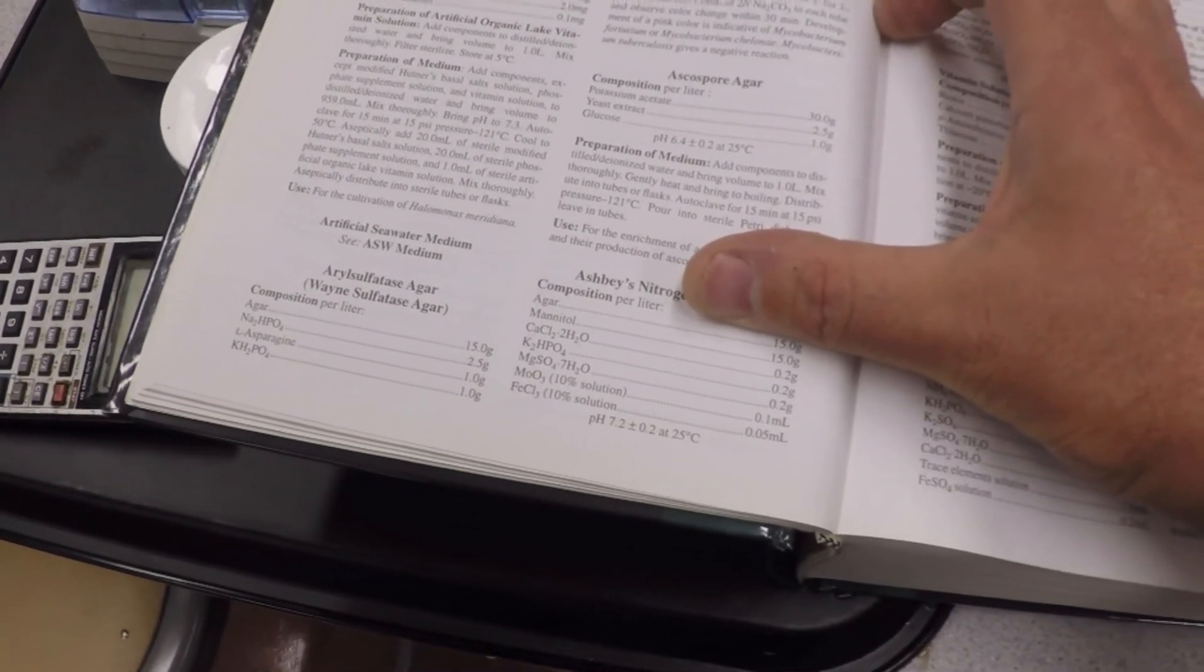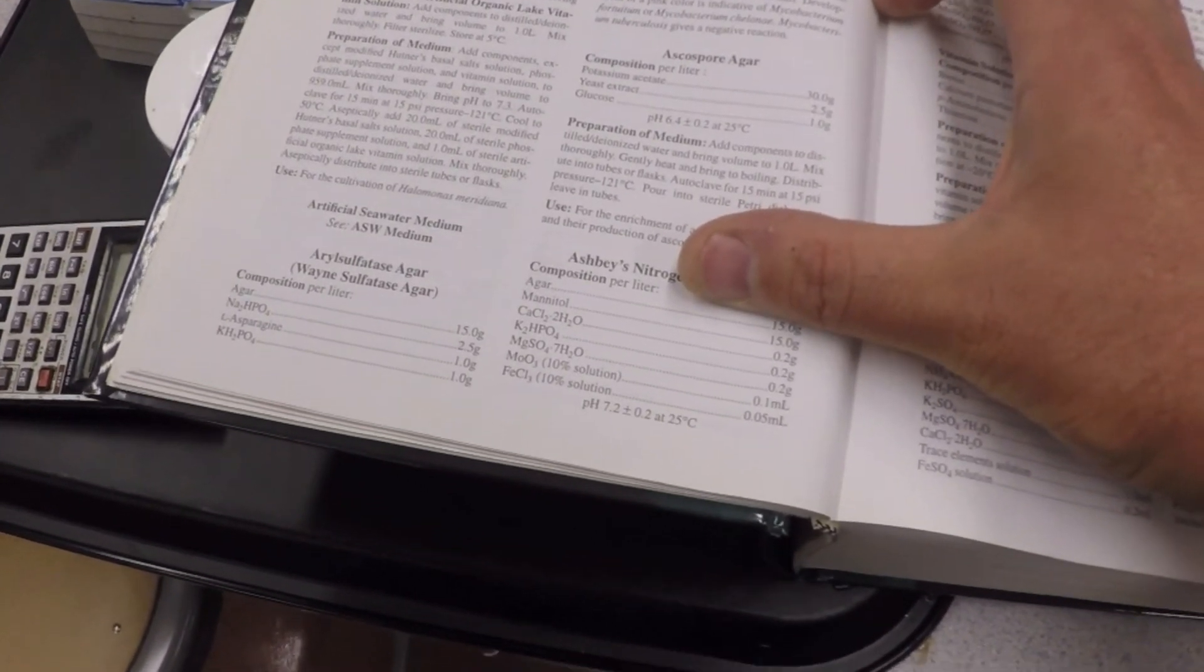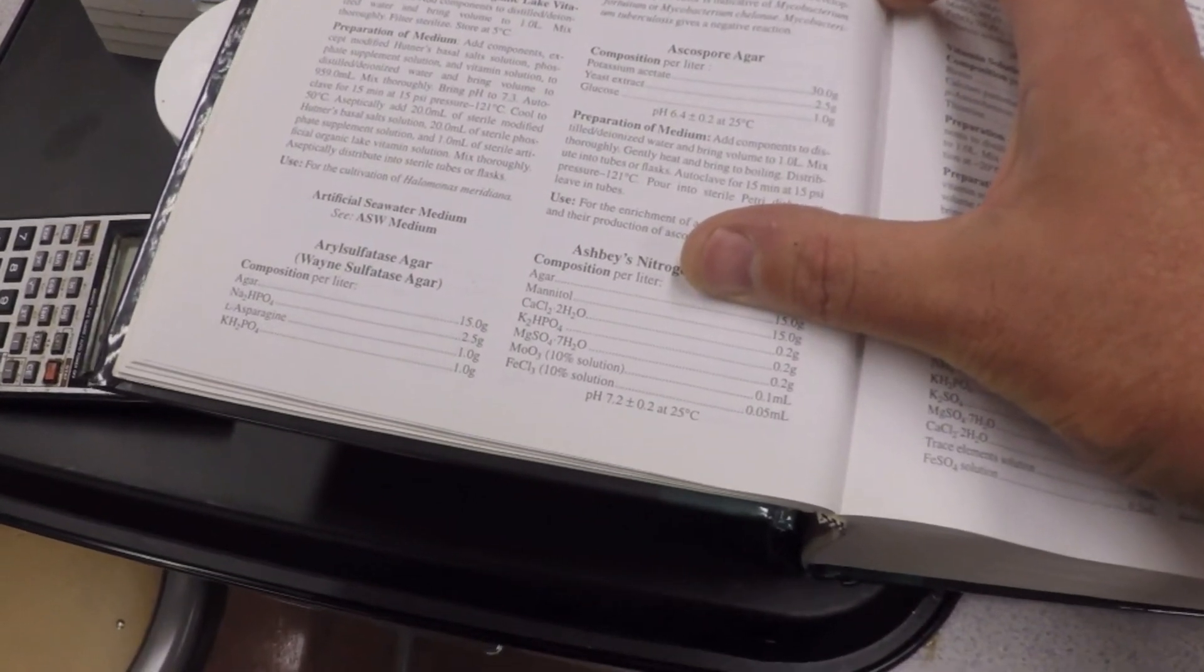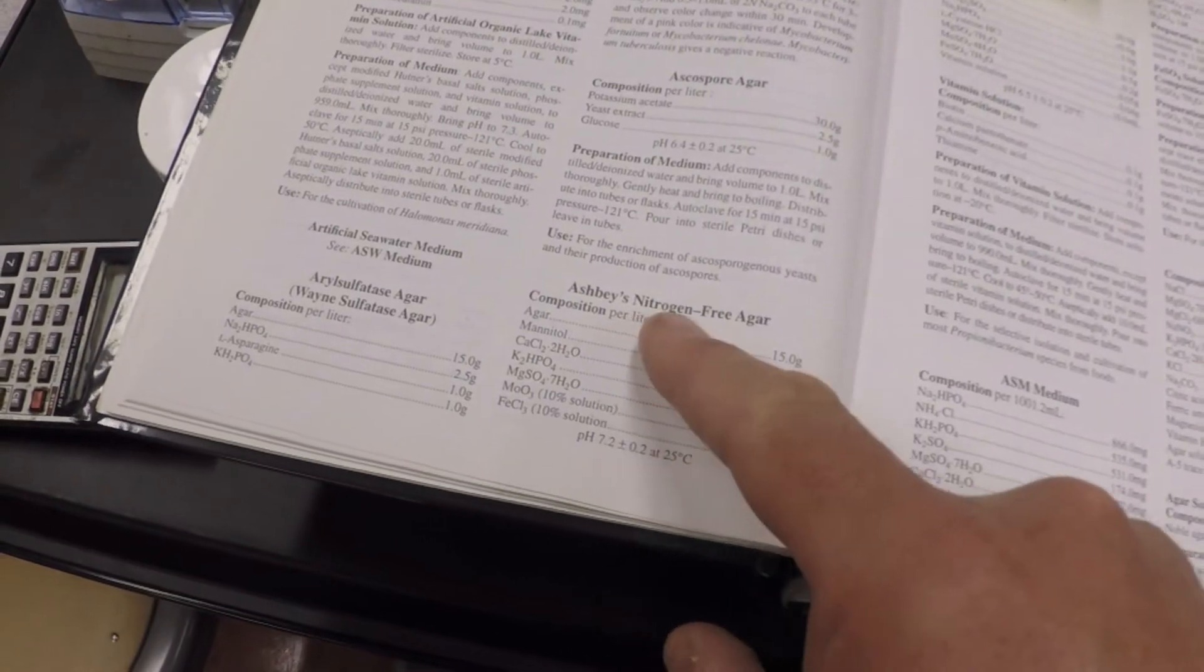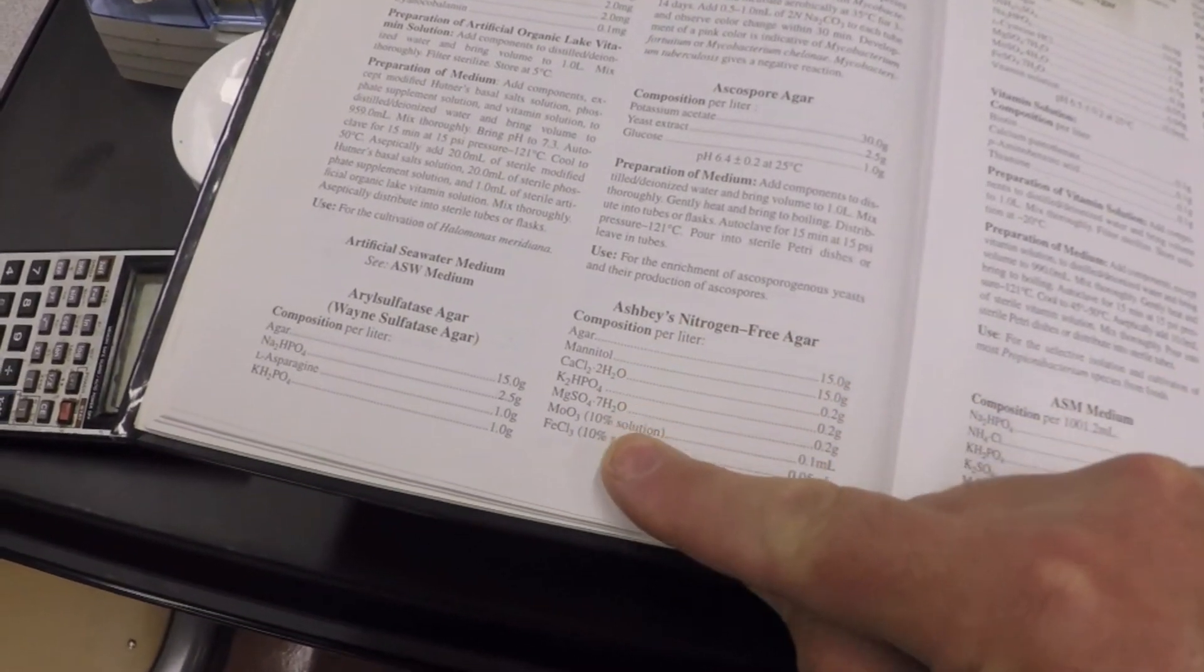Well, if you looked before my thumb was there, and if you listened to what I said, you'd know that azotobacter is a free-living nitrogen fixer. So this is nitrogen-free. Notice nowhere in here is there any nitrogen.